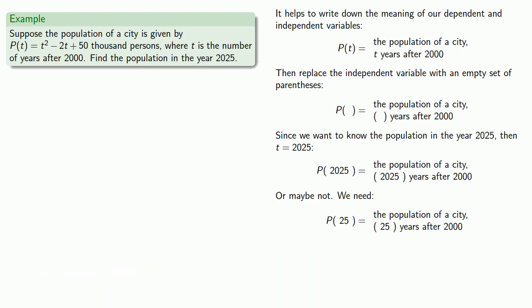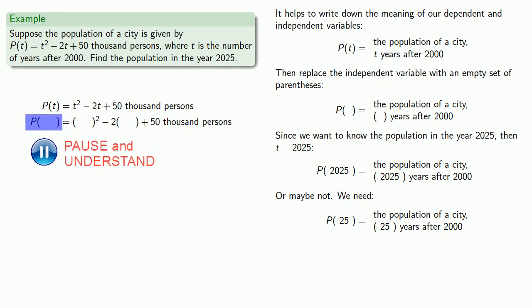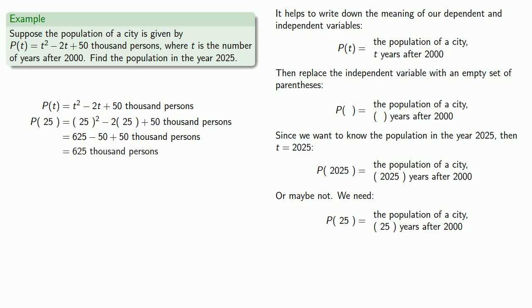So I want to evaluate P(25). So let's copy down our function definition. We'll drop every occurrence of our independent variable and leave an empty set of parentheses. And what goes in one set of parentheses has to go in all of them. So what we'd like inside the set of parentheses here is 25. So we'll put 25 in all places. And at this point, we have some arithmetic to do.